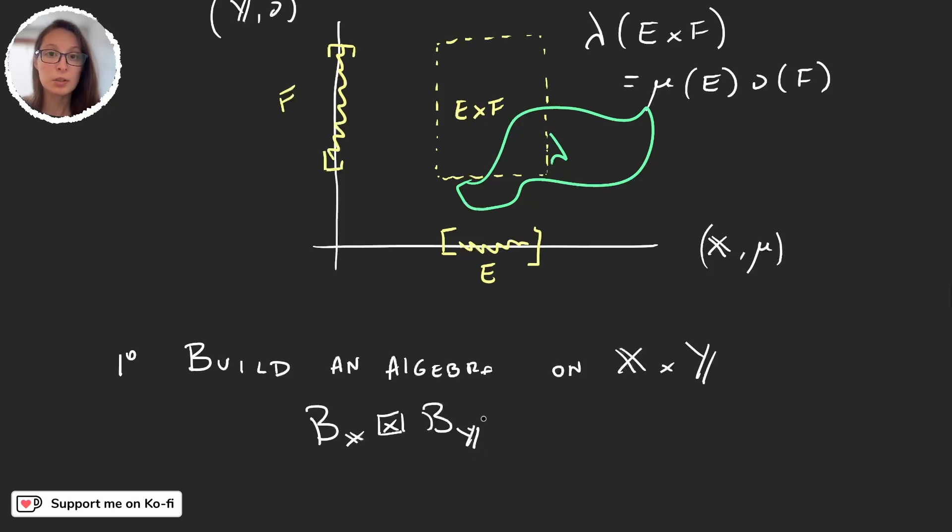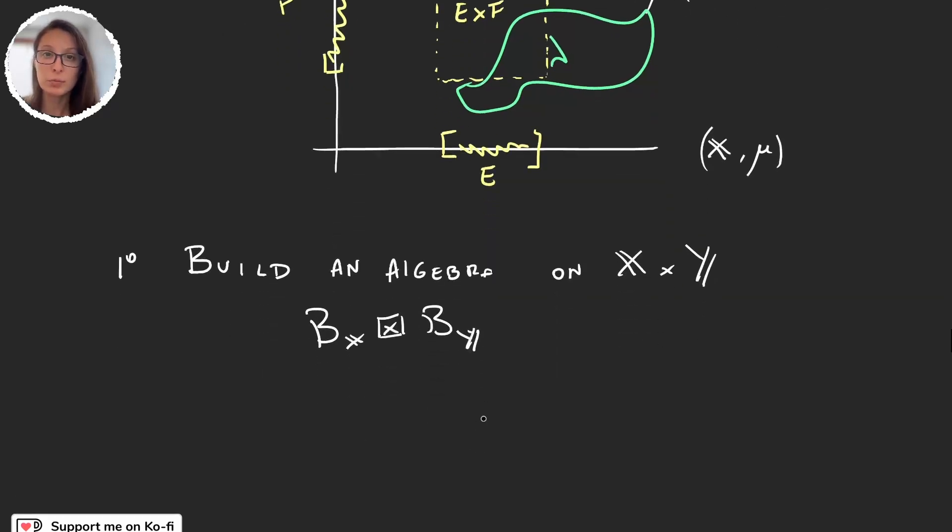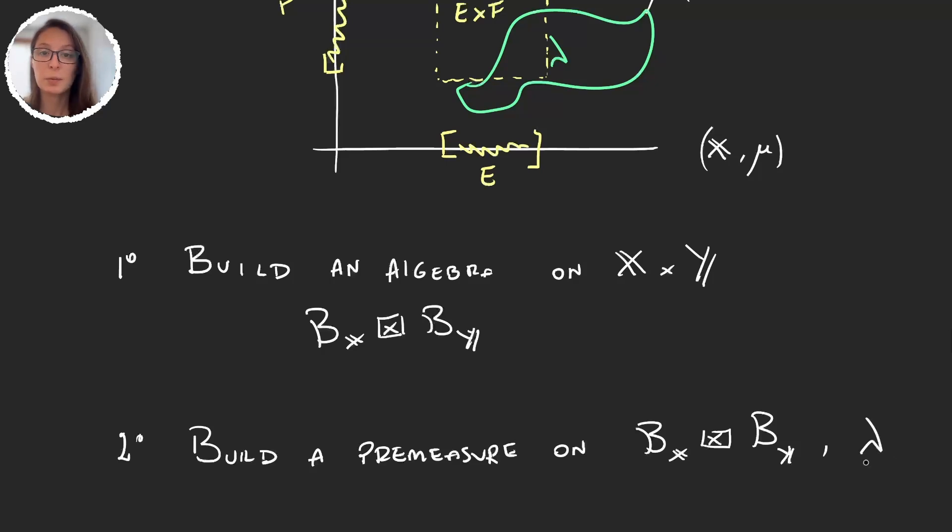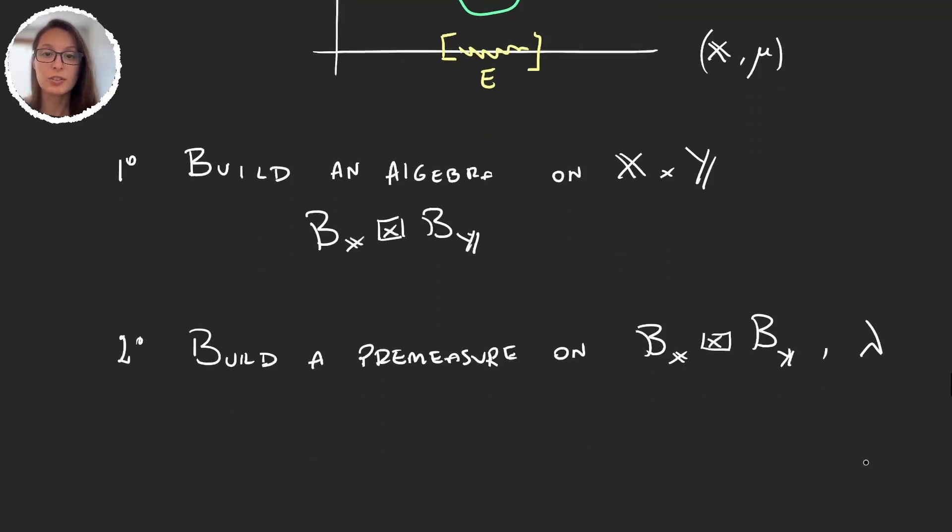And then on algebras, well, we can't define measures, but we know we can define premeasures. So the second step would be to define a premeasure on this algebra. Let's call this premeasure lambda. And now we know, by Carathéodory's theorem, that we can extend the lambda to a measure on the sigma algebra generated by this algebra.